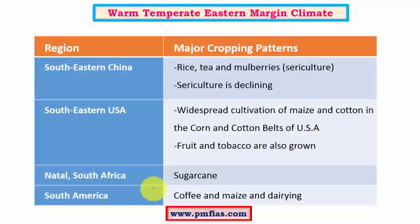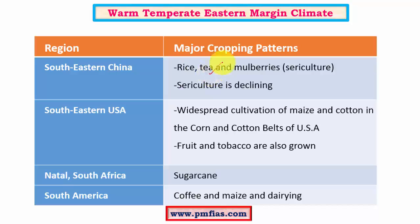Coming to major economic activities, especially agriculture: this region is very favorable for agriculture because of the uniform distribution of rainfall throughout the year, and most of the economy is highly dependent on it. In southeastern China, rice is the chief crop — China is the leading producer and most rice is domestically consumed with not much left for export. Tea is another important cash crop, and sericulture is a very important occupation, though its influence is declining mainly due to the replacement of traditional clothes with western clothes.